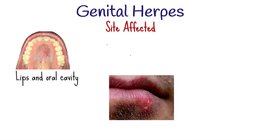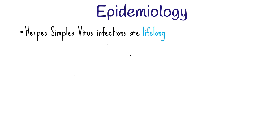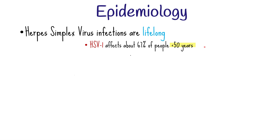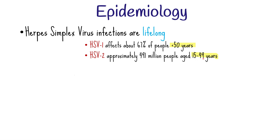One thing to keep in mind is that even if a person does not show any symptoms of genital herpes like the blisters, the herpes virus can still be transmitted to another person. Both herpes simplex virus 1 and herpes simplex virus 2 infections are lifelong. A lot of people are affected by herpes globally — about 67% of people below the age of 50 years, which equates to 3.7 billion people, have HSV-1. An estimated 491 million people aged 15 to 49 worldwide have herpes simplex virus 2 infection.